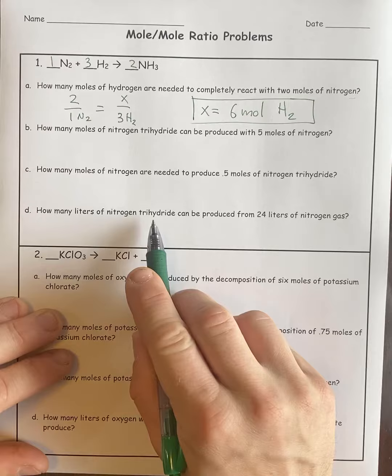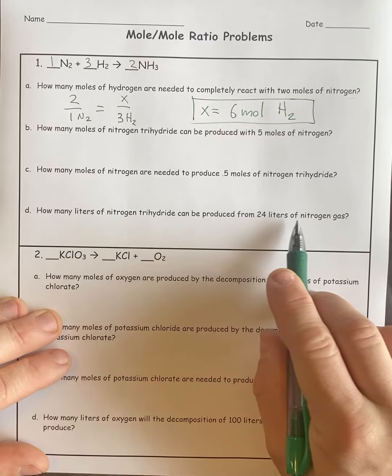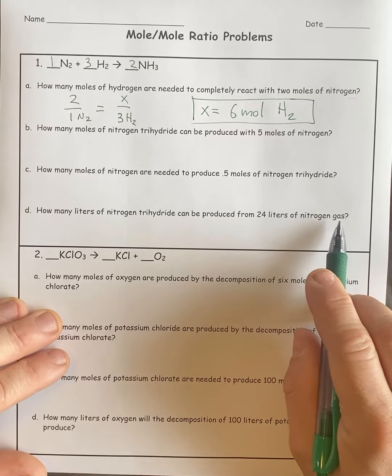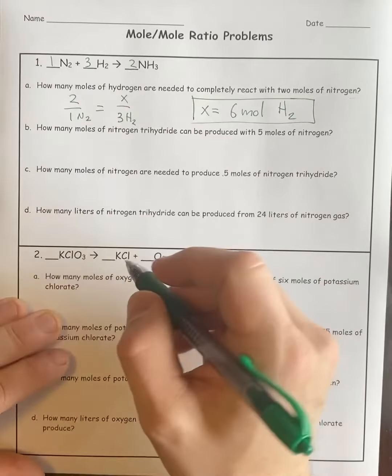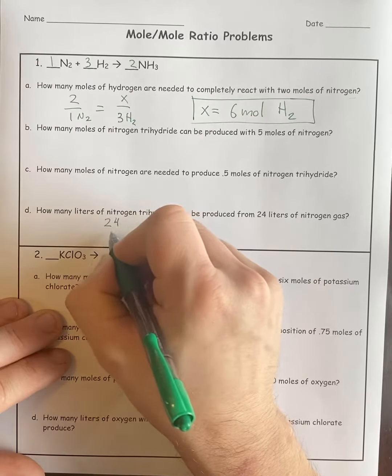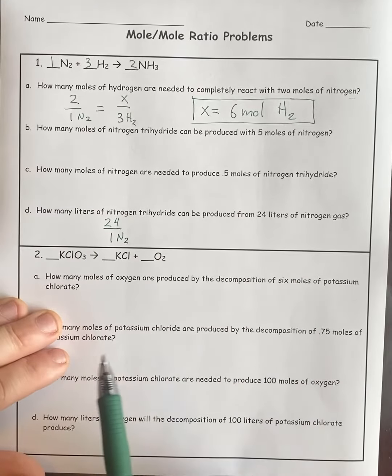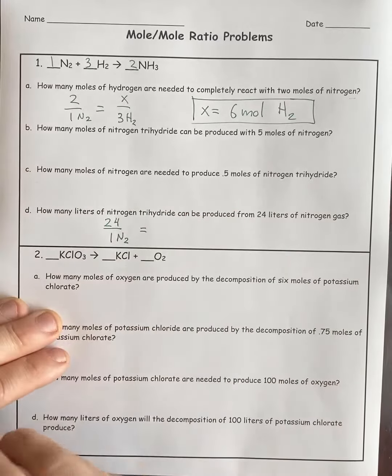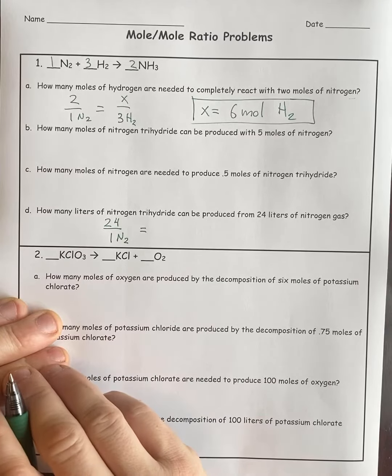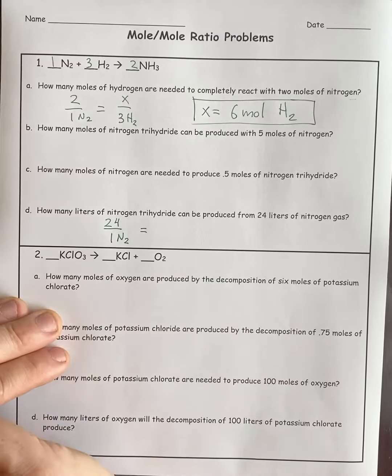D says, how many liters of nitrogen trihydride can be produced using 24 liters of nitrogen gas? 24 goes over the nitrogen. For liters only, we can plug them directly into these ratio problems and they work out fine. If you were using mass, it does not work—you have to use the mole formula first. We're not doing that in this video.